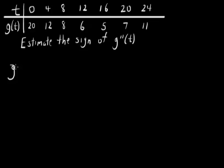So for example, g prime of 0 is approximately equal to, we've got the change in the y values over the change in the t values. It works out to negative 2.